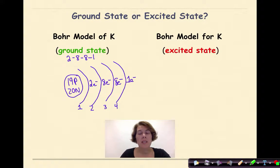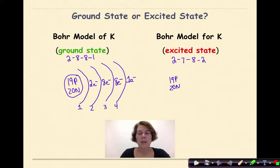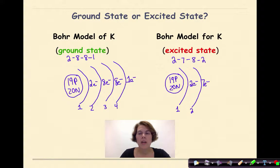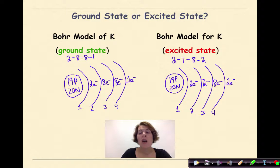We compare that to the excited state of potassium, represented as 2-7-8-2. We still have 19 protons and 20 neutrons in our nucleus — that is not going to change. In our first shell we still have two electrons, but now in our second shell we have seven electrons, third shell has eight electrons, and our fourth shell has two electrons. So an electron has jumped from the second principal energy level out to the fourth, giving us an excited state configuration of 2-7-8-2.